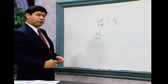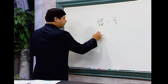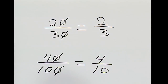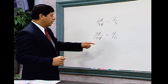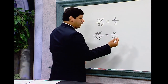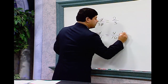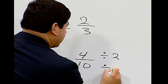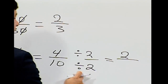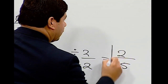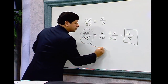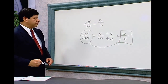The same process applies for 40 over 100. Cross out the zeros and we get 4 over 10. But looking back at what we learned, both 4 and 10 are even numbers, so we can divide by 2. 4 divided by 2 is 2, and 10 divided by 2 is 5. So 40 over 100 reduces to 2 fifths.